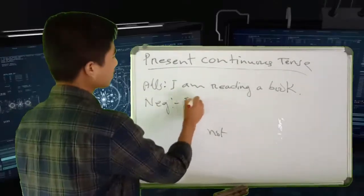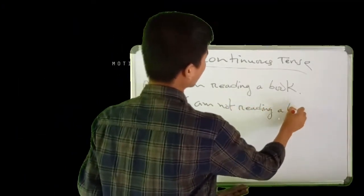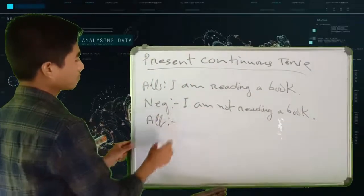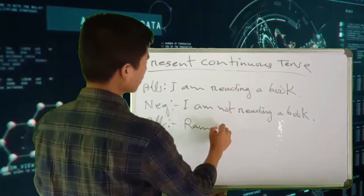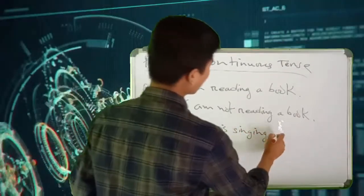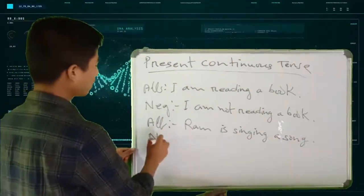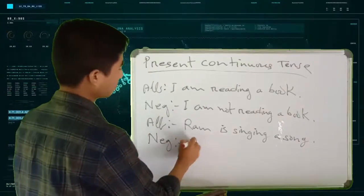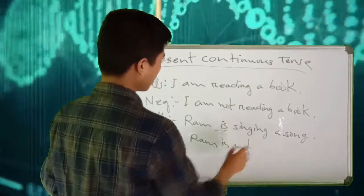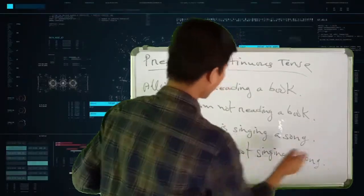I am not reading. This is a negative sentence. When we say — for example — Ram is singing a song, the negative form is: Ram is not singing a song. This is a negative sentence.